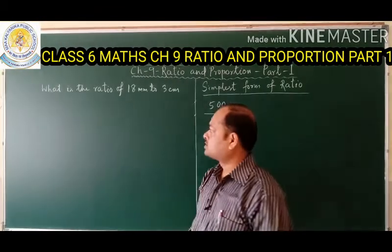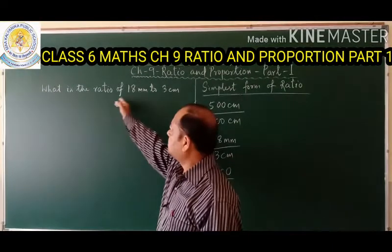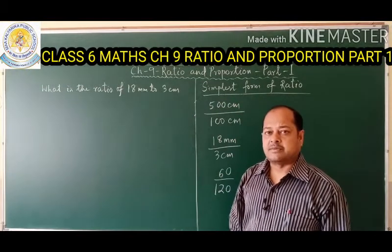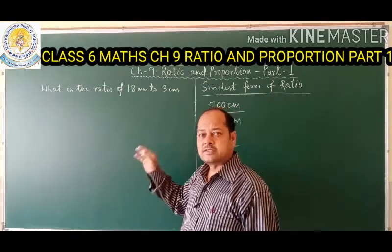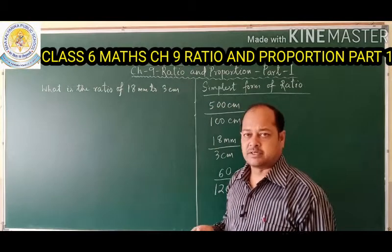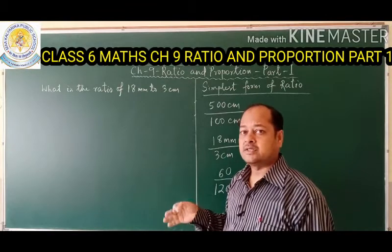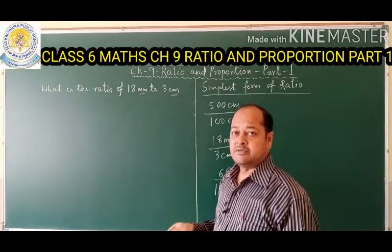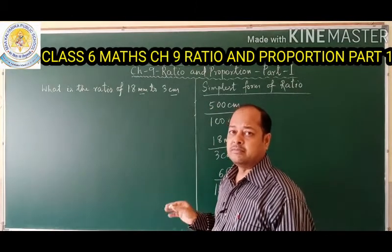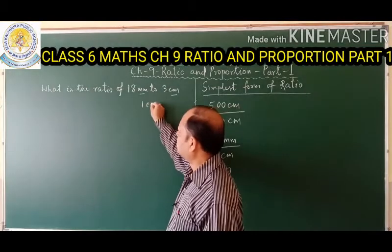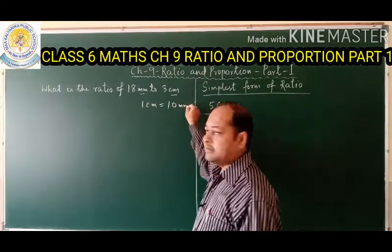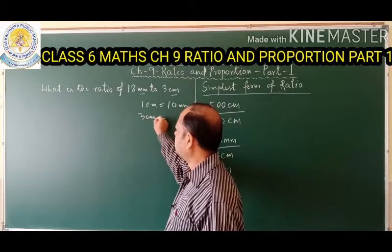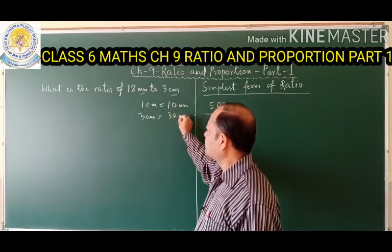Let's look at one question. The question says: what is the ratio of 18 millimeters to 3 centimeters? You observe that both units are different. So the first step is to convert them to the same unit. Here millimeter and centimeter are different, so let's convert both to millimeters. We know that 1 centimeter equals 10 millimeters, so 3 centimeters equals 30 millimeters.